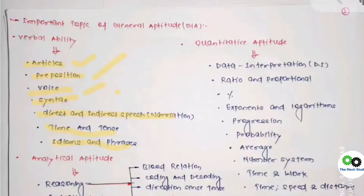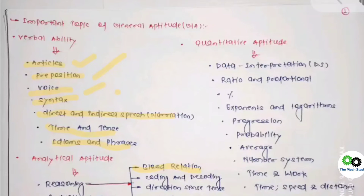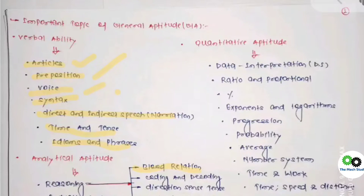Going ahead with Analytical Aptitude — the most important topic here is blood relations. Most of the time, two to three questions come from this area, but they may also ask two-mark questions depending on the scenario. They may also ask coding-type questions as the trend has changed in aptitude. Going ahead — coding and decoding, directions, and clocks have very few chances, but you can expect them. Similarly, for logical reasoning, calendars, and clocks — if you have time, go ahead; otherwise, you can skip them.